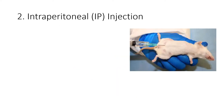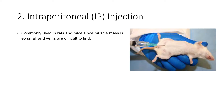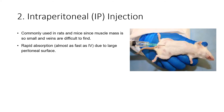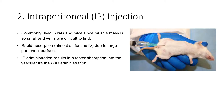The next is intraperitoneal injection, commonly used in rats and mice since muscle mass is small and veins are difficult to find. It provides rapid absorption, almost as fast as intravenous, due to the large peritoneal surface. Intraperitoneal administration results in faster absorption into the vasculature than subcutaneous administration. The injection is given in the peritoneum region.